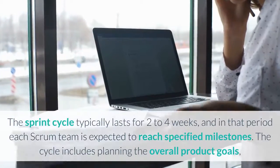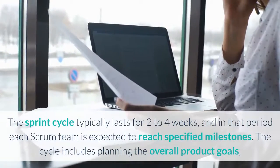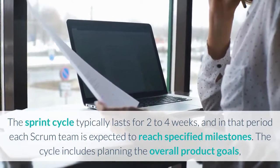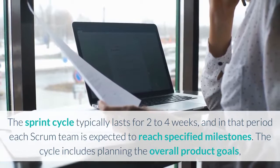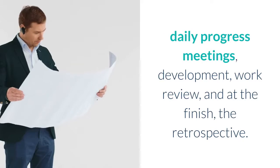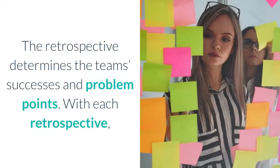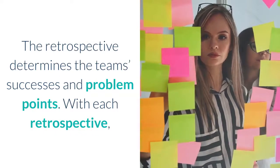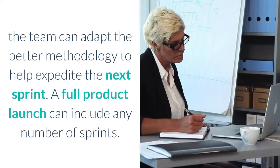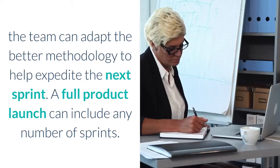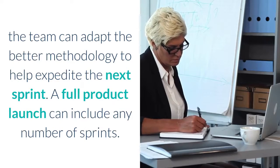The sprint cycle typically lasts for two to four weeks, and in that period each Scrum team is expected to reach specified milestones. The cycle includes planning the overall product goals, daily progress meetings, development, work review, and at the finish, the retrospective. The retrospective determines the team's successes and problem points. With each retrospective, the team can adapt a better methodology to help expedite the next sprint. A full product launch can include any number of sprints.